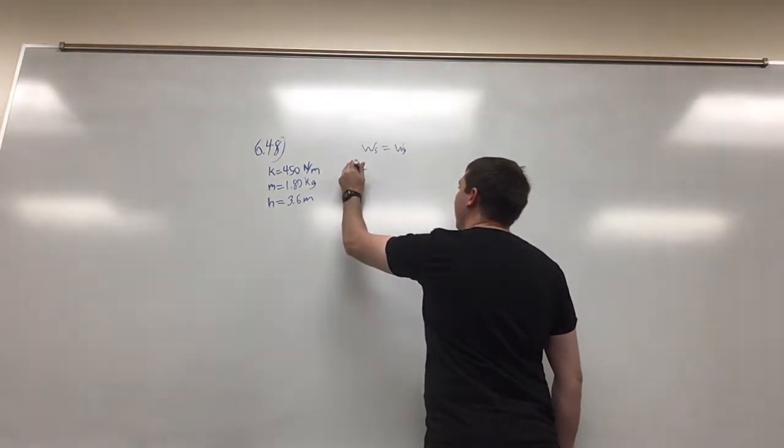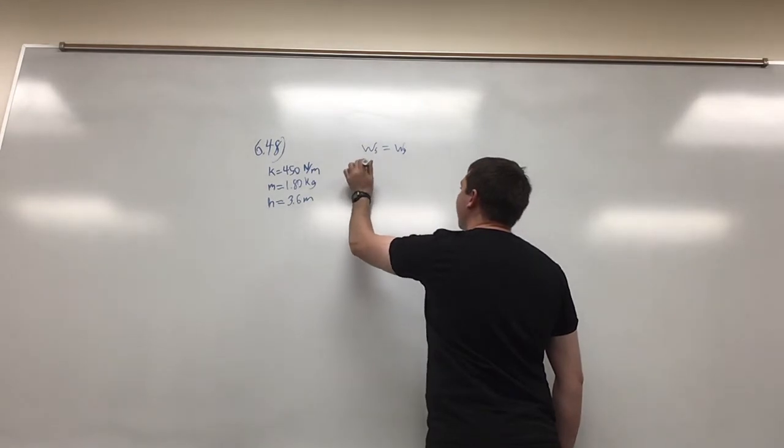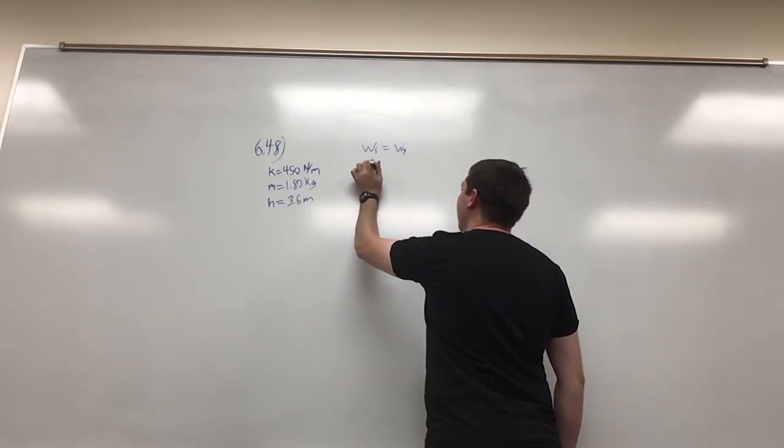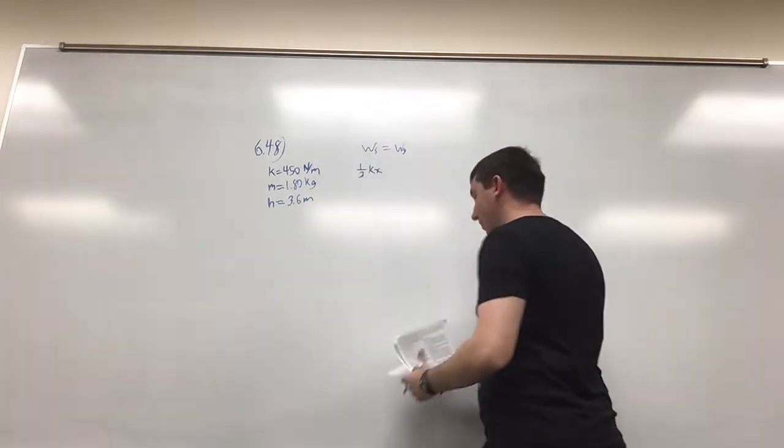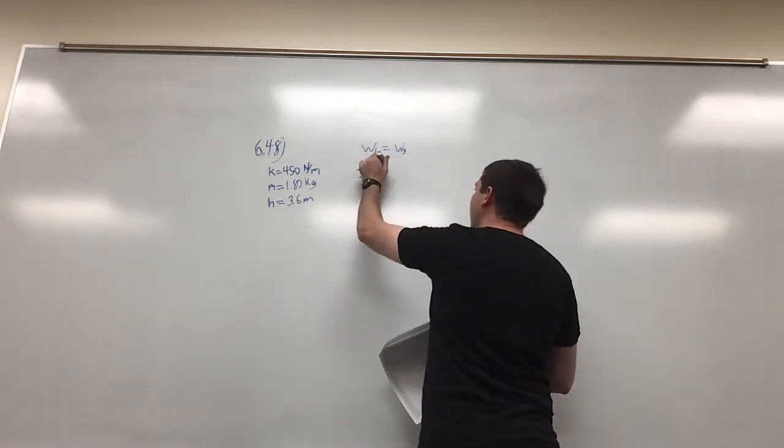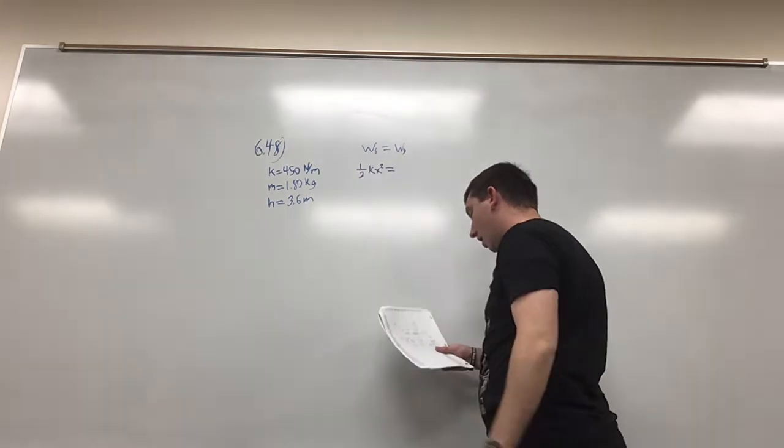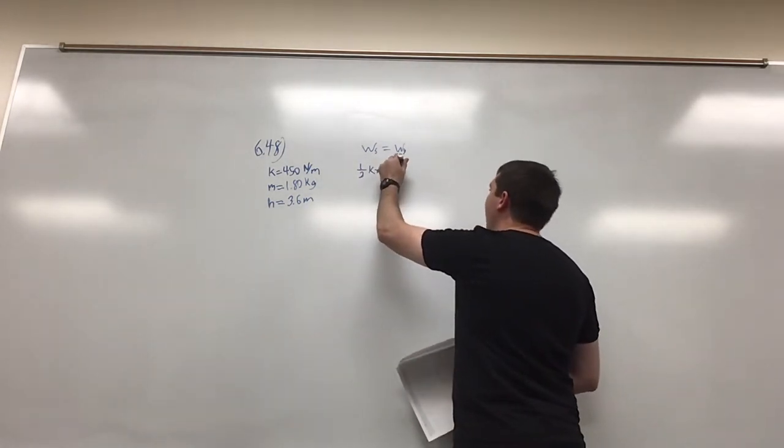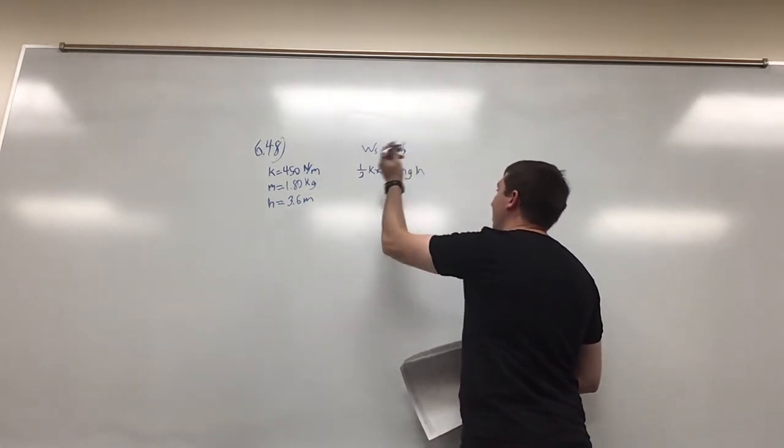We can then rewrite that. The work of the spring is going to be one half the spring constant times x squared, the distance that the spring is compressed, and the work of gravity is going to be equal to the mass times gravity times the height.